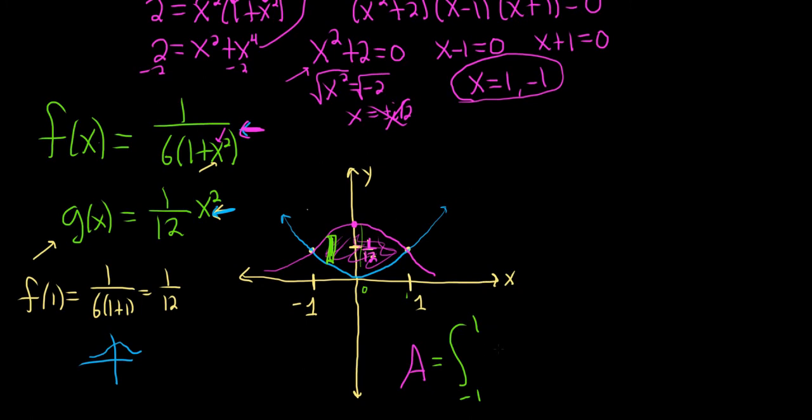So that's 1 over 6, parentheses, 1 plus x squared minus, and then the bottom most function is g. So 1 12th and x squared. And then here we have our dx.